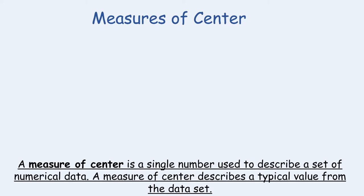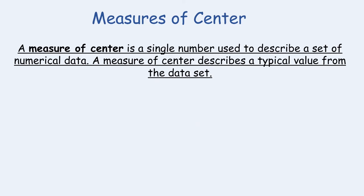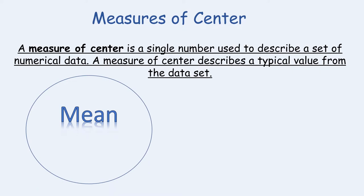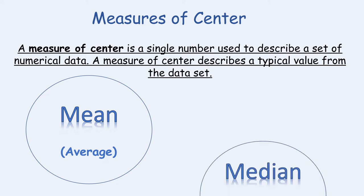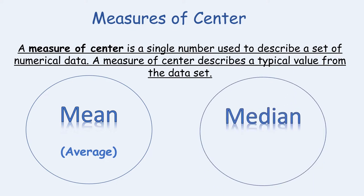Measures of center. A measure of center is a single number used to describe a set of numerical data — it describes a typical value from a data set. We're going to focus on two measures of center today. The first is mean; a synonym for mean is average. The second is median, and a synonym for median is the middle. Let's continue to investigate.